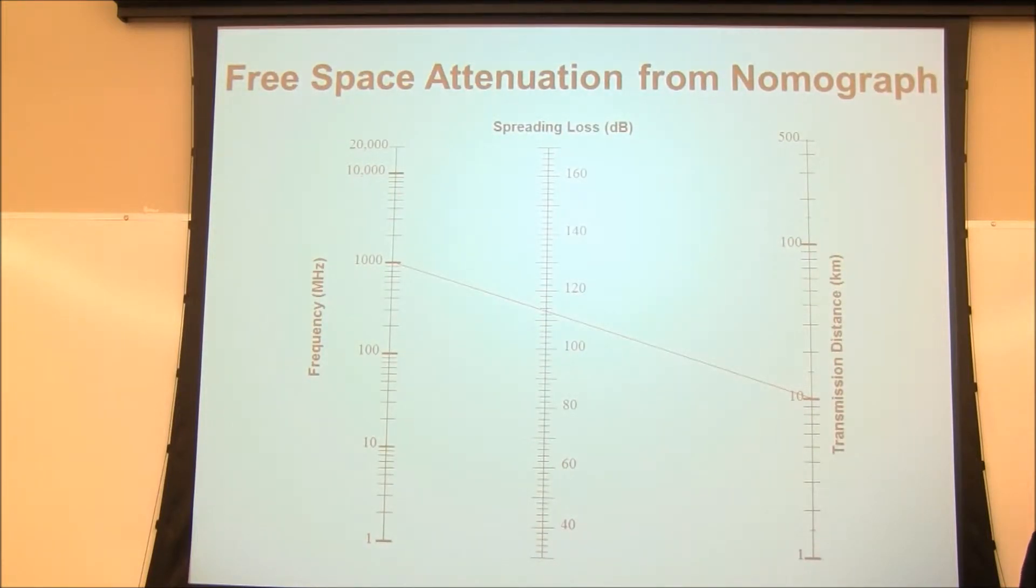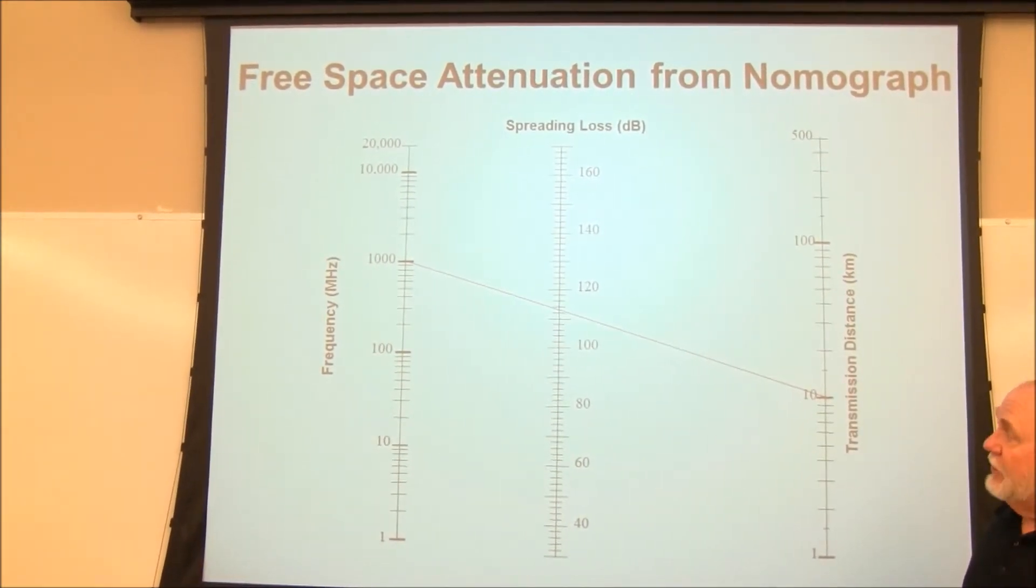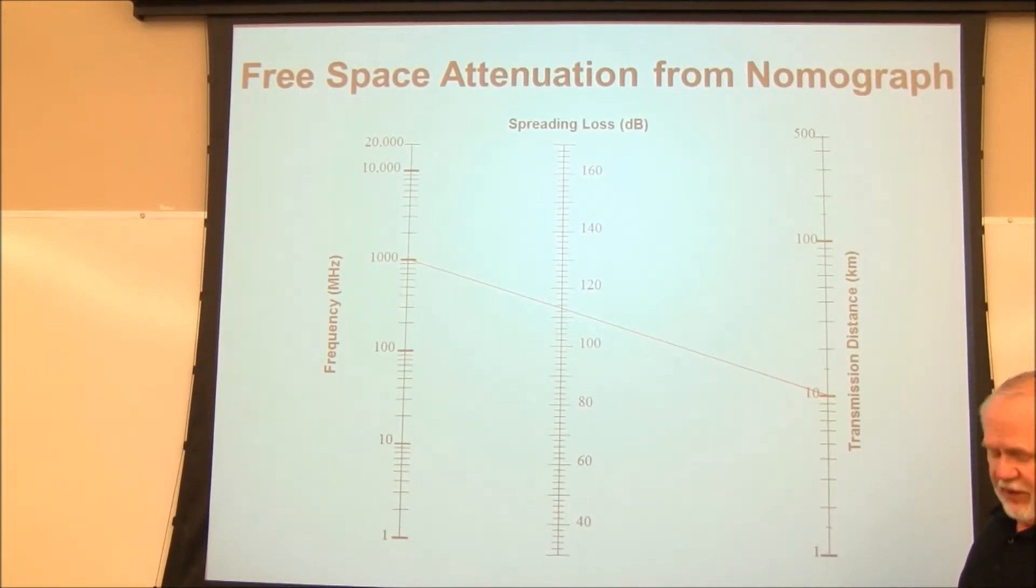This is an example of a nomograph that's used for a part of the propagation discussion. If you put a distance, the line is that propagation. You have the frequency, draw a line to the distance, you can read the loss here, the spreading loss. But that's just for one, and there are nomographs for each of the multiple propagation models, as well as the slide rule, as well as formulas for each of the propagation models. This is one of the areas that we cover.